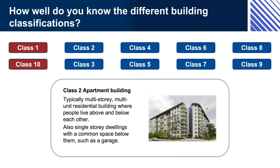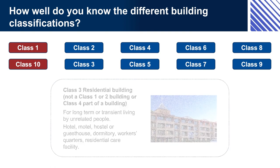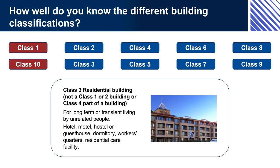Class 2: apartment building, typically multi-storied, multi-unit residential building where people live above and below each other; also single-storied dwellings with a common space between them such as a garage. Class 3: residential building — not a Class 1 or 2 building or a Class 4 part of a building — for long-term or transient living by unrelated people: hotel, motel, hostel or guest house, dormitory, workers quarters, residential care facility.